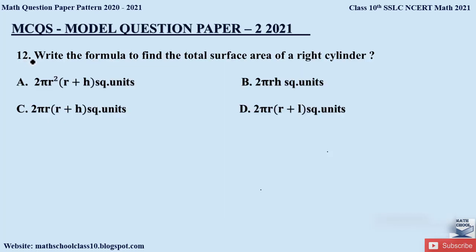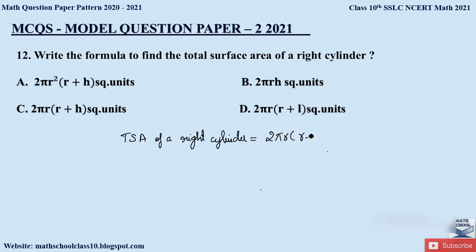Question 12: Write the formula to find the total surface area of a right cylinder. The total surface area of a cylinder is 2πr(r + h) square units. The correct option is option C. The other options are very similar, so read carefully before selecting.